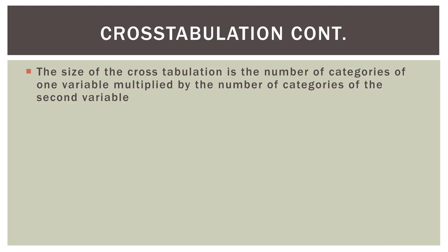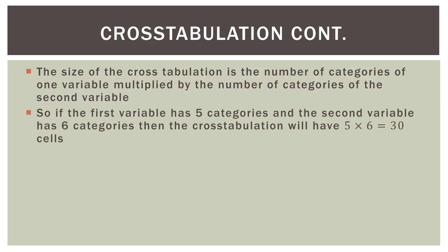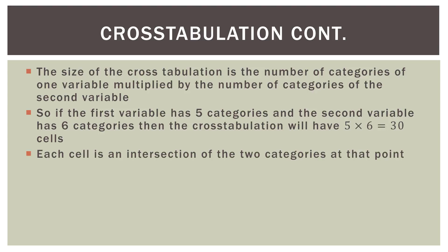The size of the cross tabulation is the number of categories of one variable multiplied by the number of categories of the second variable. So if the first variable has five categories and the second variable has six categories, then the cross tabulation will have five times six, or 30 individual cells, where each variable intersects with the other. Each cell is an intersection of the two categories at that point, and you'll end up with 30 individual cells — similar to working in Microsoft Excel.